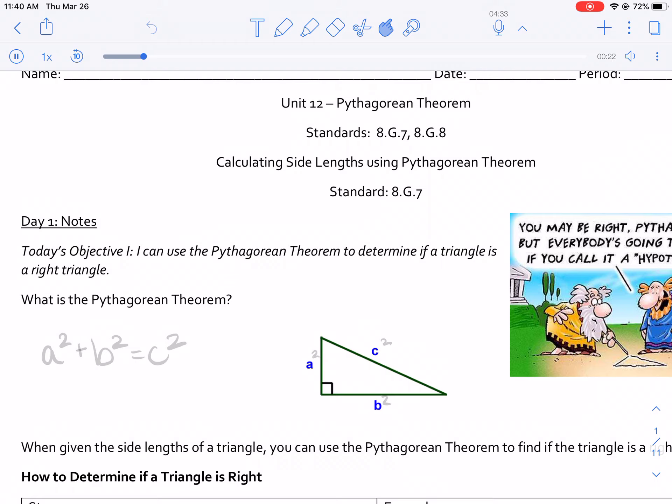If you remember from our last lesson, the Pythagorean Theorem is a² + b² = c². Or that when you square the legs of a right triangle, they added together equals the square of the hypotenuse.